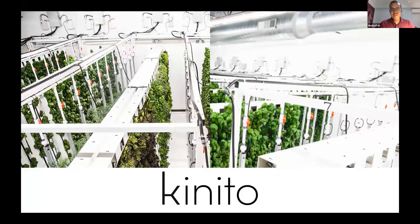Hi everyone, thank you all for coming. We are really excited to showcase our product and what we've been doing over the past one year. We are CUNITO and we use robotics to automate processes in urban farms so that workers can be more productive and farms can produce more crops. We have partnered with Upgrown Farming, who will be distributing our products to farms. The picture above is a typical environment in a farm.